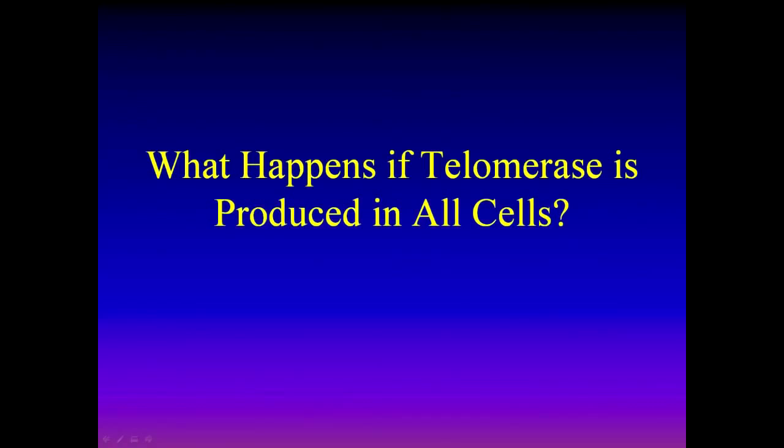Now, the next question is, what happens if we get telomerase in all of our cells? And this is research that I did shortly thereafter, after discovering telomerase. We put the gene for telomerase into normal human skin cells, first grown in a petri dish and then further experiments. And we showed that, this is almost 20 years ago now, when we put telomerase into these cells and the telomere shortening stopped, these cells stopped showing any signs of aging. They essentially became immortal growing in the petri dish.